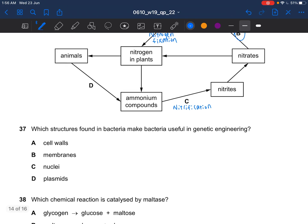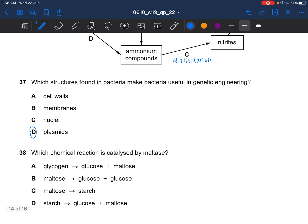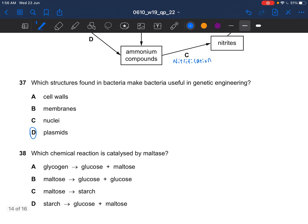Next question, which features found in bacteria make bacteria useful in genetic engineering? That would be your plasmid. Plasmids are very small so that they can be inserted into cells.